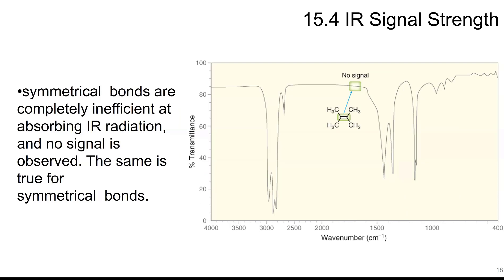Symmetrical bonds are completely inefficient at absorbing radiation. So you usually don't see a signal. So this would be where a double bond carbon-carbon would show up. But because this is symmetrical, it's not making any difference here. So there's no signal there. This one would be around 1500 to 2000. But it won't show up because of the symmetry.